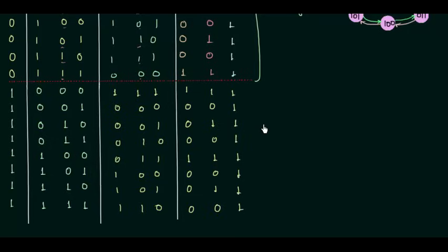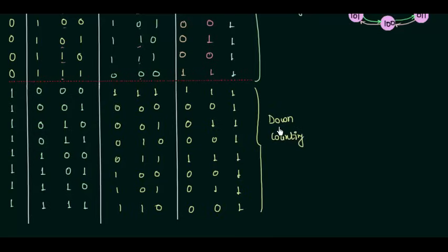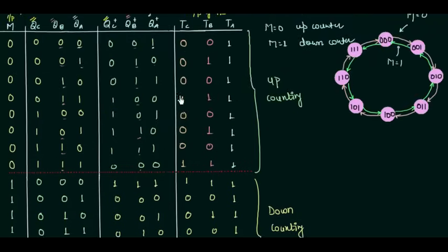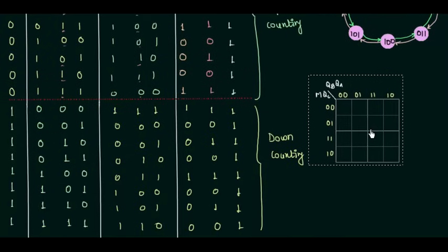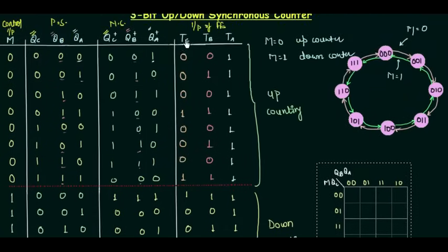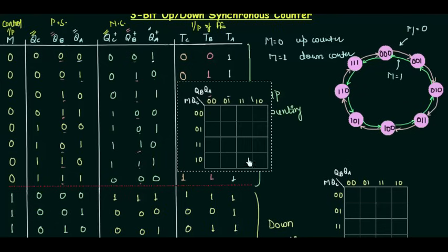We have now completed the circuit excitation table for the 3-bit up-down synchronous counter. The next step is to find the minimized expressions for TC, TB, and TA using K-maps. Since we have 4 variables — M, QC, QB, and QA — we need a 16-cell K-map. We will use three such maps: one each for TC, TB, and TA.